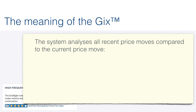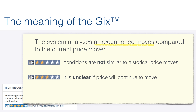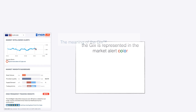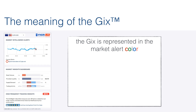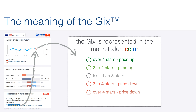The system analyzes all recent price moves compared to the current price move. In order to give a rating: two stars or below means conditions are not similar to historical price moves; three means it's unclear if price will continue to move; four and above means price is very similar to what's happened in previous episodes. In the Market Intelligence Alerts, you'll see the GIX rating correspond to the color of the Market Alert — dark green signals a strong bullish signal, whereas dark red is a strong bearish signal. Blue highlights an important price move but there's no significant GIX calculation.